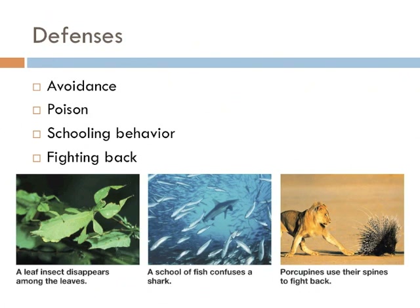Fish and herds of mammals practice schooling behavior as a defense mechanism. When a predator comes in contact with a school of fish, for example, the shark can't concentrate on a single fish and becomes confused. Species that are common prey also fight back — this is why elephants have tusks, moose are the most dangerous animal in North America, and porcupines have spines.